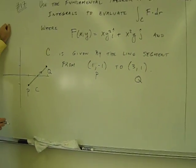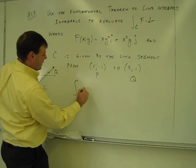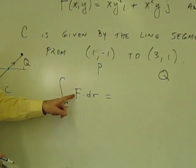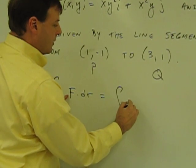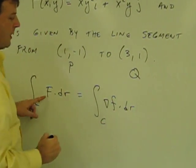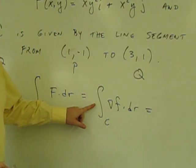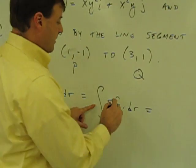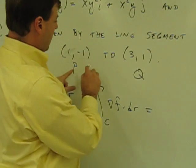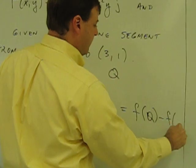In using the fundamental theorem, what that says is that the integral over the contour of this vector field, if this vector field happens to be the gradient of some function, then evaluating this integral amounts to simply finding out what that function is — whose gradient is this vector field — and then plugging in these points. It'll be F of Q minus F of P.